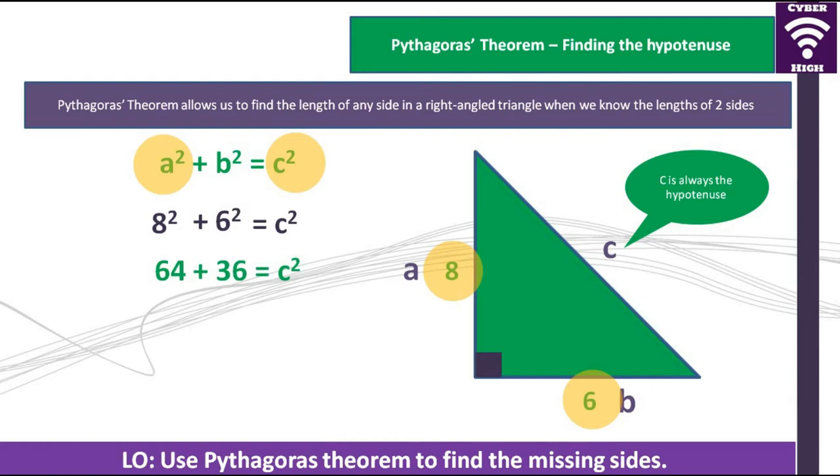When you square the two sides, you will get 64 plus 36, which gives us 100. So c squared is equal to 100. To find the value of c, we need to square root 100 to get c, which gives us 10. The value of c, according to the Pythagoras theorem, is 10.